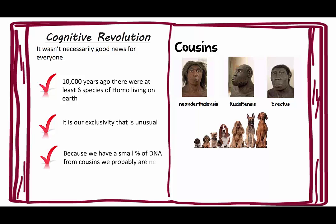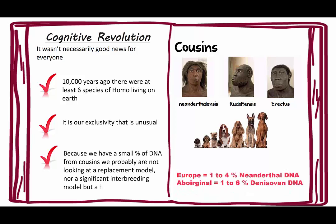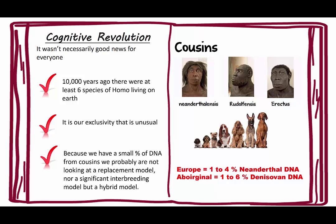Because we have a small percentage of DNA from cousins, we're probably not looking at a replacement model, nor a significant interbreeding model, but a hybrid model — which is what Harari talks about. In Europe, there's about 1 to 4% Neanderthal DNA. The Aboriginal Australians have about 1 to 6% Denisovan DNA. Basically it means it wasn't a total replacement, but it also means there wasn't significant interbreeding.